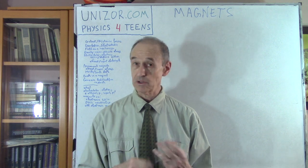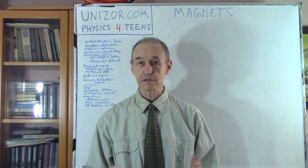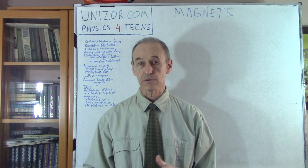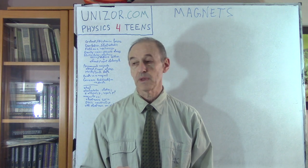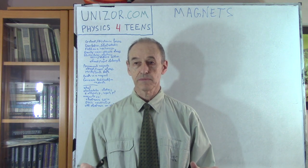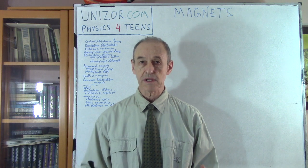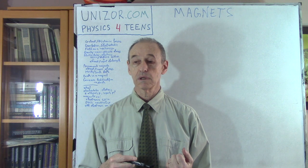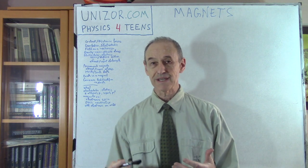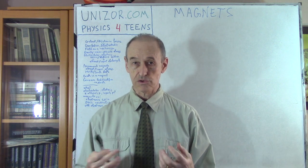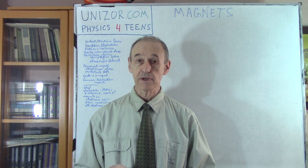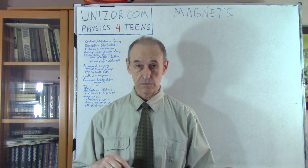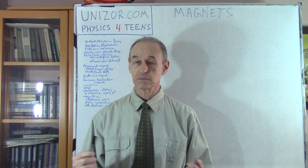So far we were talking about gravitational forces — they act at a distance — and electrostatic forces also act at a distance. There are similarities and differences between these forces. Gravity always exists whenever you have any material object, and gravitation always attracts two objects. In case of electrostatic forces, they exist only if you have charged objects.